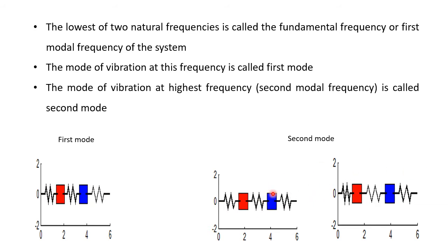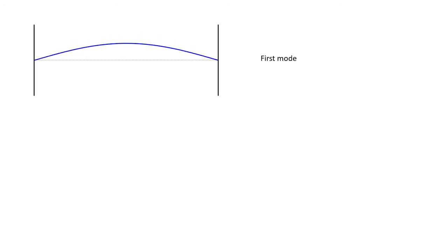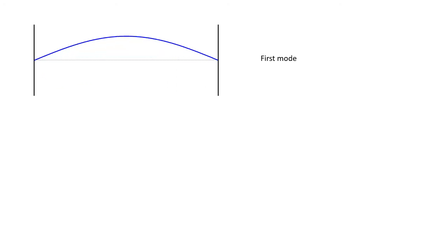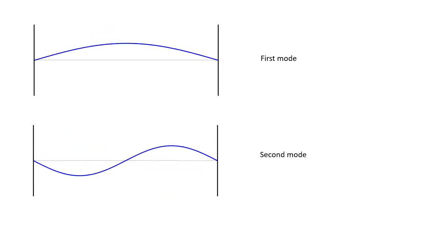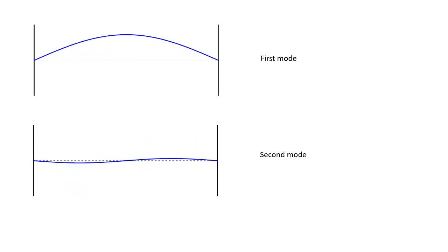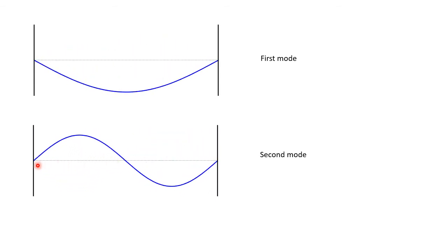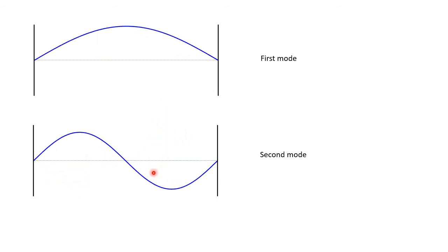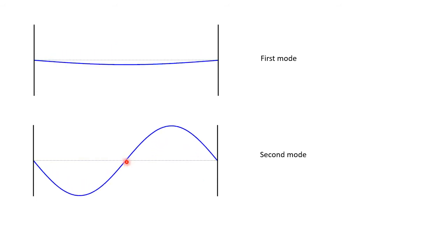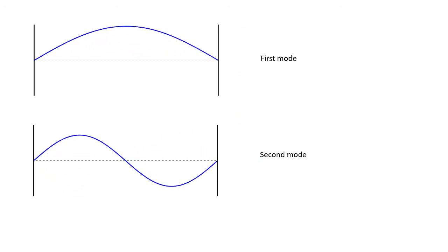The main difference between the two modes is that in the second mode, the masses move in opposite directions. This is another example — the transverse vibration of a string. In the first mode, particles are moving either upward or downward in a harmonic manner. In the second mode, one section of the string moves downward while another moves upward, and there is a nodal point which is not affected by the transverse vibration.